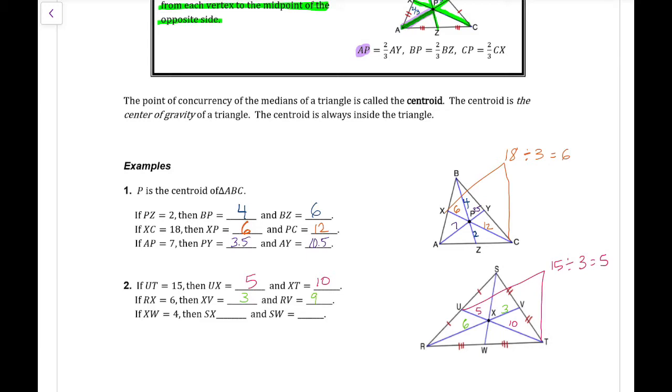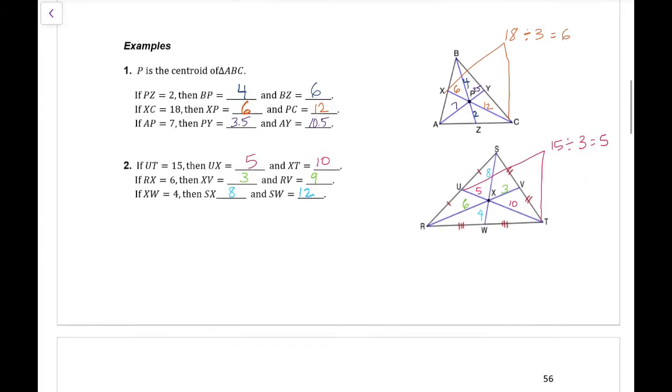Looking at the last side of the triangle. If XW is 4, that's the short side. That's one third. Two thirds would be twice as much. So 4 would be XW. SX would be 8 and SW would be 12.